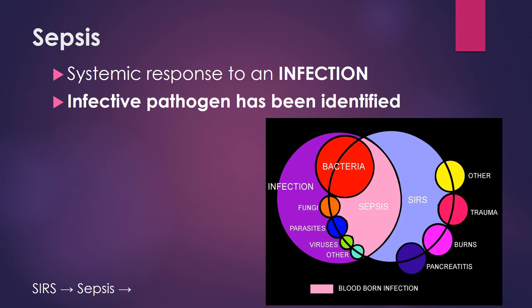Sepsis is very similar to systemic inflammatory response syndrome, with the key point that it is in response to an infection and an effective pathogen has been confirmed. This is a perfect example of the combination between an infection and systemic inflammatory response syndrome. You could have SIRS and it not be sepsis, but once you combine it with an infection — as you can see in the middle overlap — that's what creates the sepsis. Really, that's the only difference: once you've identified an infection.